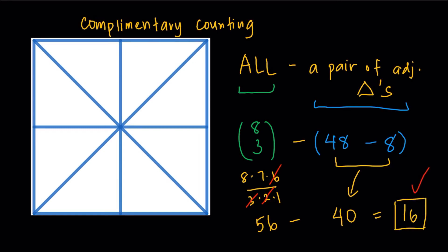So there would be 16 ways to color three triangles such that no two of them is adjacent. Alright, so hopefully you guys learned something new from this video and I'll see you in the next one. Bye-bye.